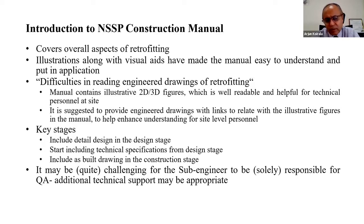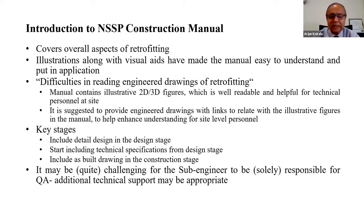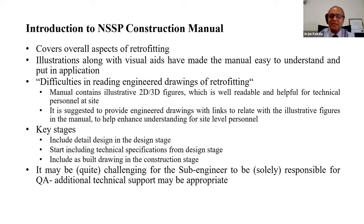The technical team has worked out the key stages in much detail. One option could be to start thinking about technical specifications from the very beginning of the design stage rather than putting this at a later stage. The manual also advises there could be variations - actual designs may not be taken directly to the field because of varying conditions on site. We need as-built drawings, which can be incorporated in the construction process. It may be quite challenging for sub-engineers to solely take responsibility for quality assurance, so I would propose additional support for sub-engineers if that can be accommodated in the organisation chart.